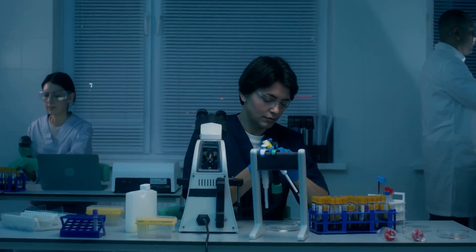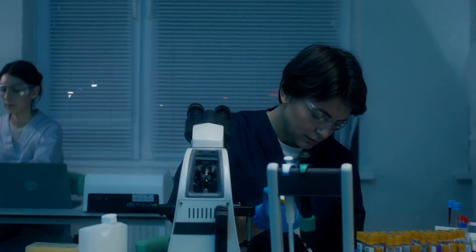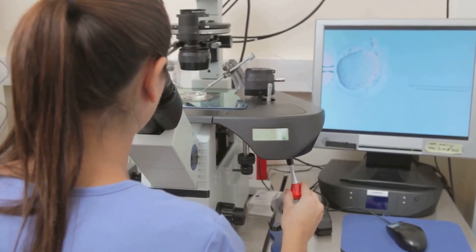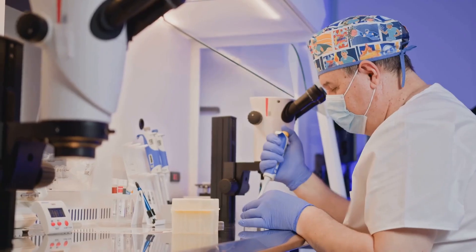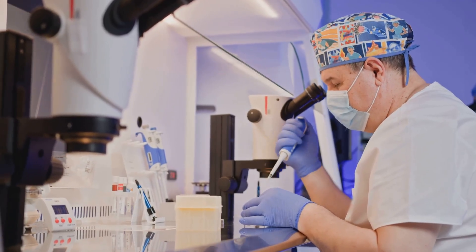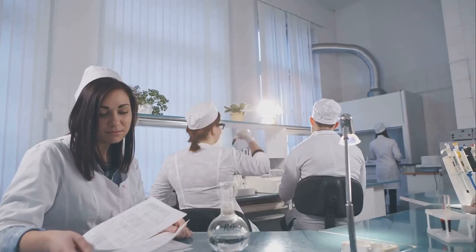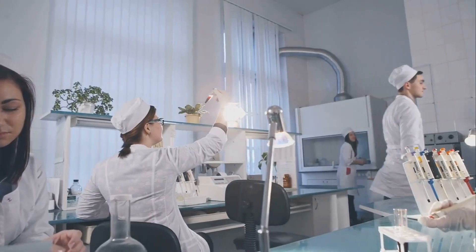The so-called three-parent baby technique is designed to prevent mitochondrial diseases. First, you take the mother's egg, which has faulty mitochondria, and remove its nucleus. Then you insert this nucleus into a donor egg that has healthy mitochondria. Finally, you fertilize the reconstructed egg with the father's sperm. The result is a baby with nuclear DNA from two parents but mitochondria from a third. This technique has been approved in countries like the United Kingdom, but only under strict oversight.